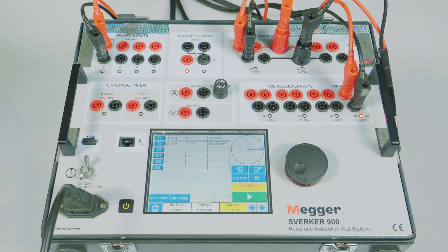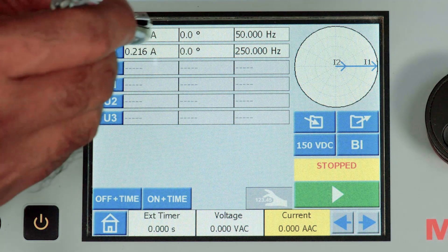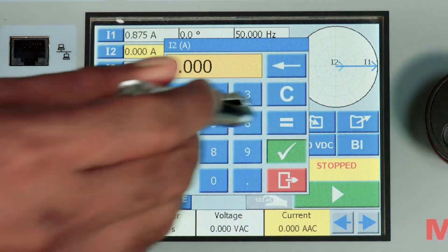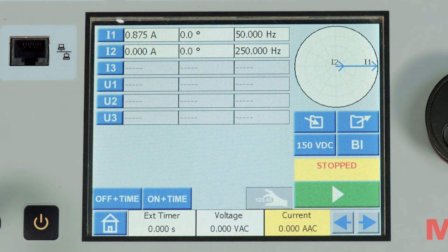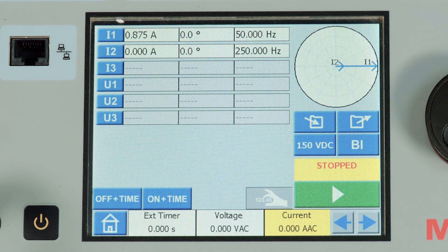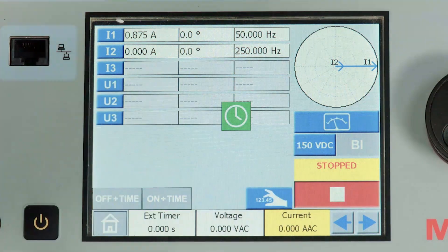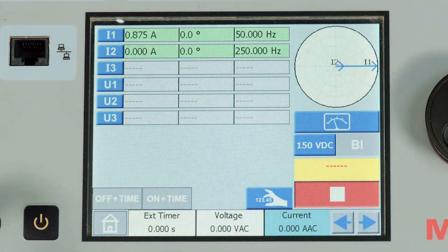Let us test using the operate to non-operate method. In this method we will inject 0.875 angle 0 at 50 Hz in CT1 and 0 angle 0 at 250 Hz in CT2 of the test kit. When the above value is injected the relay will trip in differential.